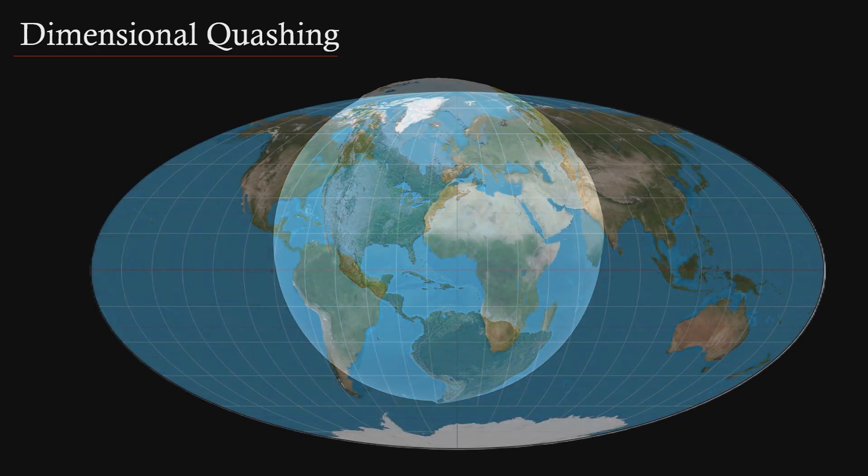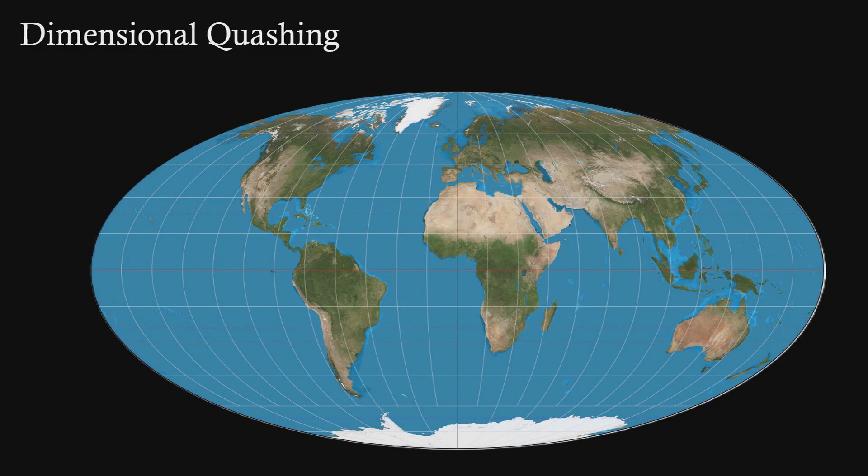This is the Mollweide projection of the Earth, which originally appeared in 1805 and is a remarkable example of quashing a three-dimensional sphere surface down to two dimensions. The significance is that it's impossible for us to ever see the planet looking like this.